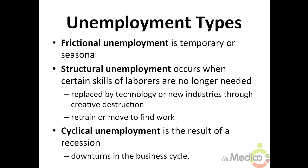There are three main types of unemployment: 1) Frictional unemployment — temporary or seasonal, including recent graduates and people who quit their job to look for something better; 2) Structural unemployment — occurs when certain skills of laborers are no longer needed, including people replaced by technology or new industries through creative destruction, who need to retrain or move to find employment; 3) Cyclical unemployment — the result of a recession, including people laid off because the economy has contracted, associated with a downturn in the business cycle. Frictional and structural unemployment are completely normal and make up an economy's natural rate of unemployment.